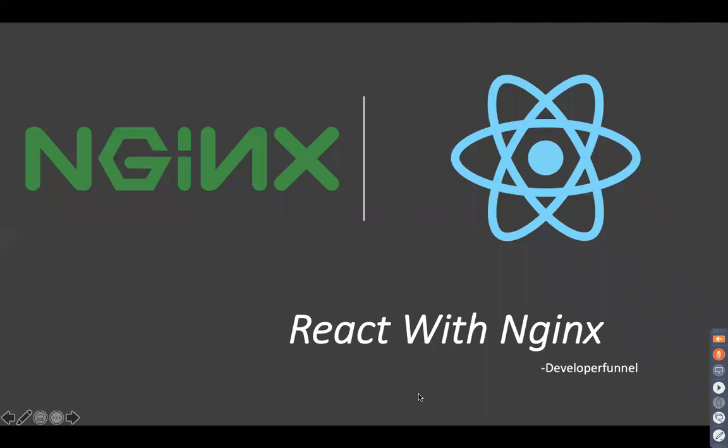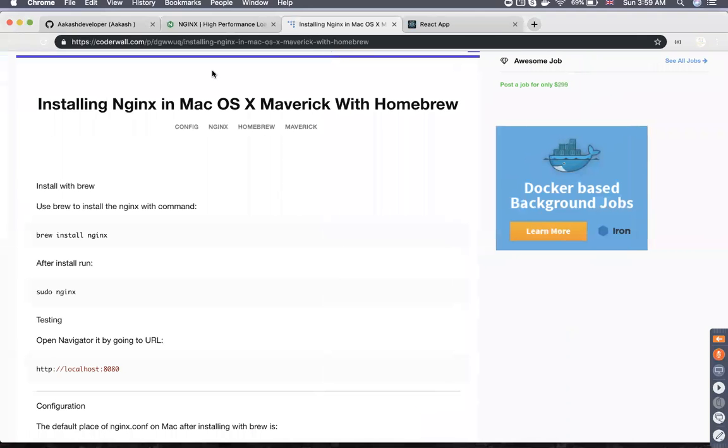Hi guys, welcome back to Developer Funnel. Today we are going to talk about how to deploy a React application on Nginx — how we can take the application to production. The application that we run in the Node environment is a local environment, but to take it to production we need a production server that can manage the load and handle multiple requests. For doing all this, the best choice is Nginx.